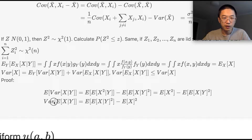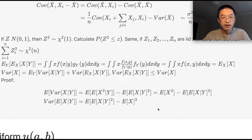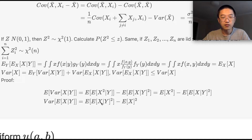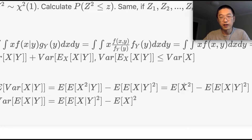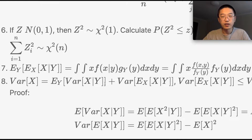For the second term, Var(E[X|Y]), by definition of variance we have E[(E[X|Y])²] − (E[X])². When we add both terms together, the E[X²] and E[(E[X|Y])²] terms cancel appropriately, and what remains is E[X²] − (E[X])², which is just Var(X).